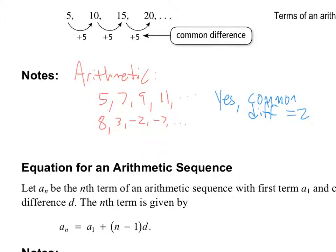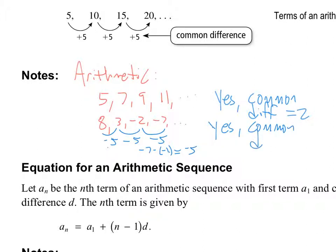How about this sequence: 8, 3, negative 2, negative 7? We're going down this time. What's 3 minus 8? That's negative 5. Negative 2 minus 3 is negative 5. Negative 7 minus negative 2 — watch out with your negatives — that's also negative 5, because subtracting a negative is like adding. So yes, it is arithmetic, and the common difference is negative 5.